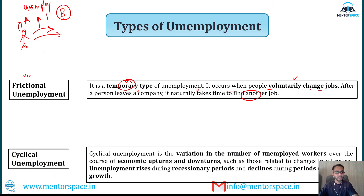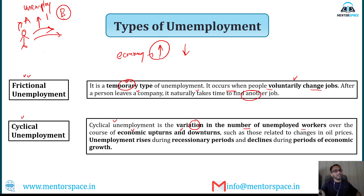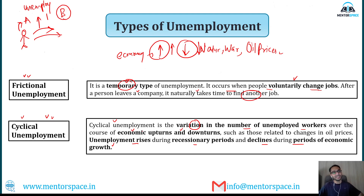Cyclical unemployment is a variation in the number of unemployed workers over the course of economic upturns and downturns. During an upturn, jobs increase in a country. During a downturn — such as a natural disaster, war, or rising oil prices — employment decreases. This is cyclical unemployment. It rises during recessionary periods and declines during periods of economic growth.